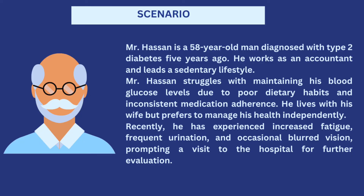Here's a scenario we'll work with: Mr. Zan is a 58-year-old man diagnosed with type 2 diabetes five years ago. He works as an accountant and leads a sedentary lifestyle with no exercise. Mr. Zan struggles with maintaining his blood glucose levels due to poor dietary habits and inconsistent medication adherence. He lives with his wife but prefers to manage his health independently. Recently he has experienced increased fatigue, frequent urination, and occasional blurred vision, prompting a visit to the hospital for evaluation.